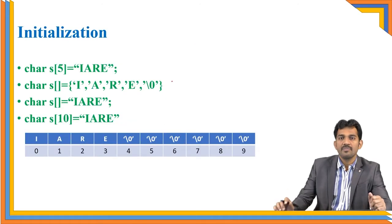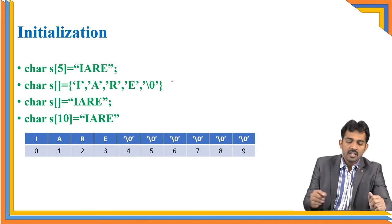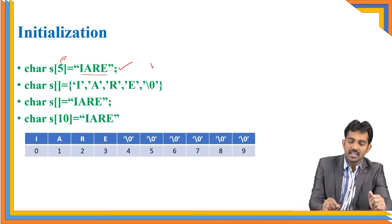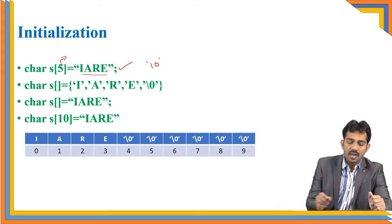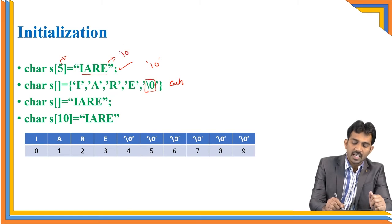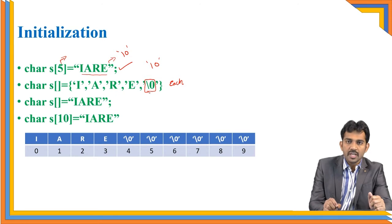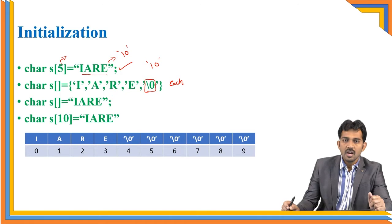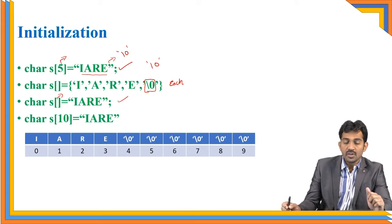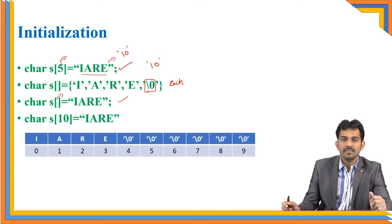We will see how to initialize the string. One way is by representing the size of the character array — for example, specifying 5 because there are 4 characters and one null character. Another way is to assign each element separately, where you represent the null character explicitly. When you initialize with double quotes, the compiler automatically takes the last character as the null character. You can also declare without mentioning the size. When you create a string, all the remaining spaces are filled with null character by default.